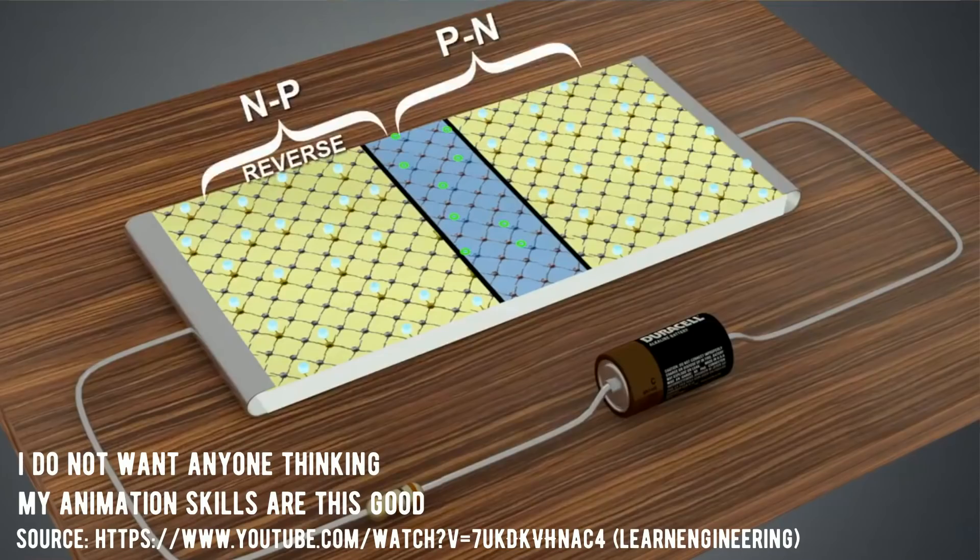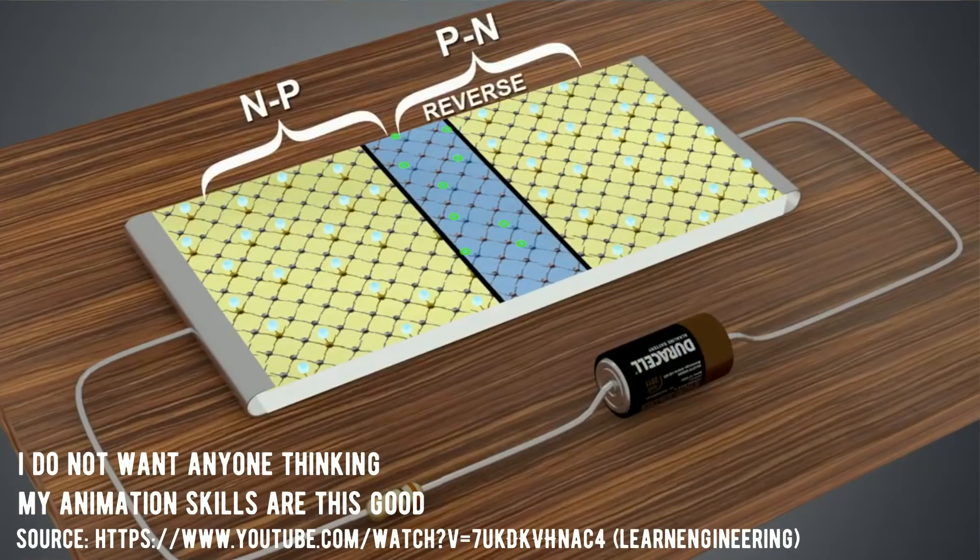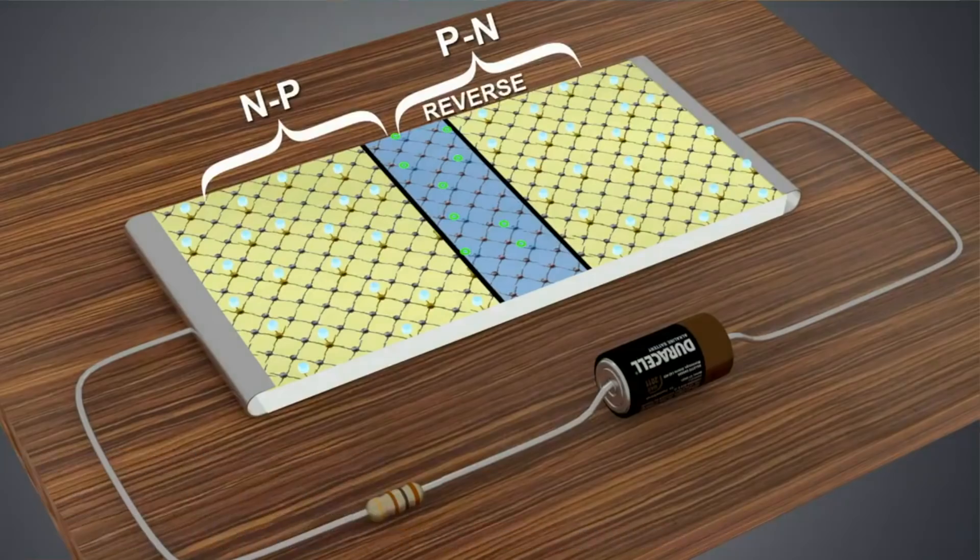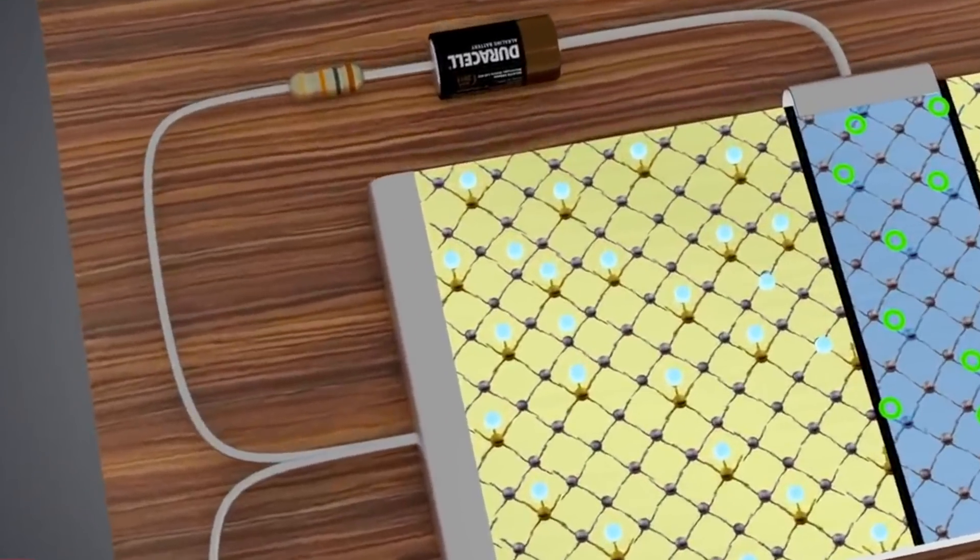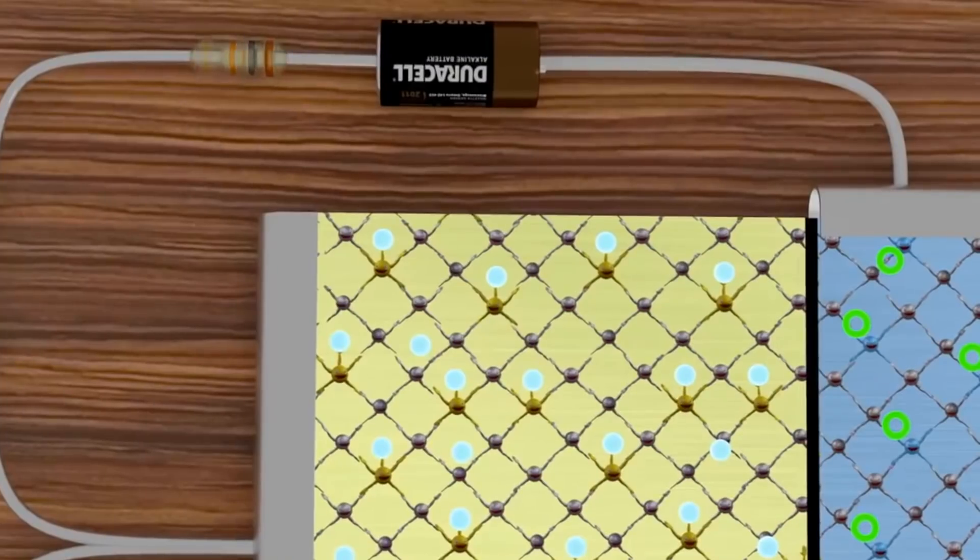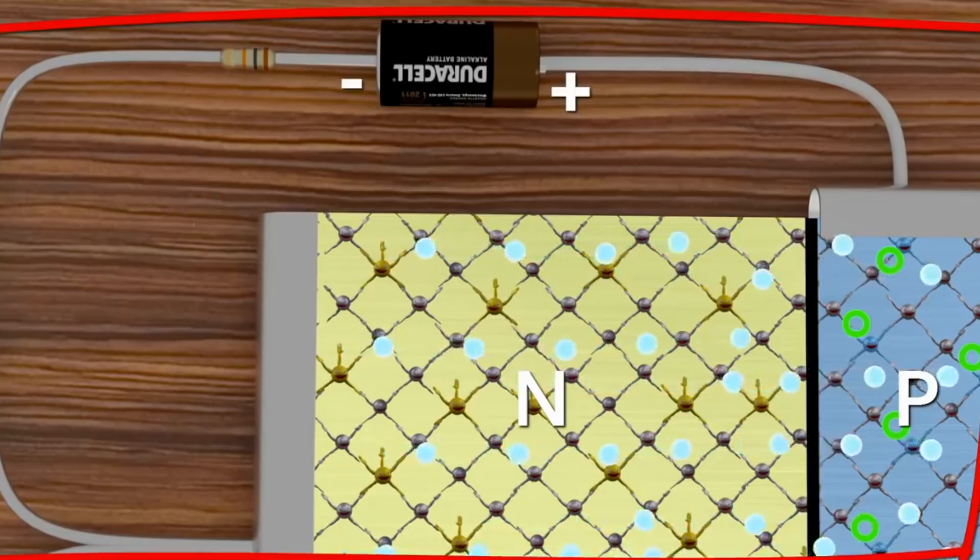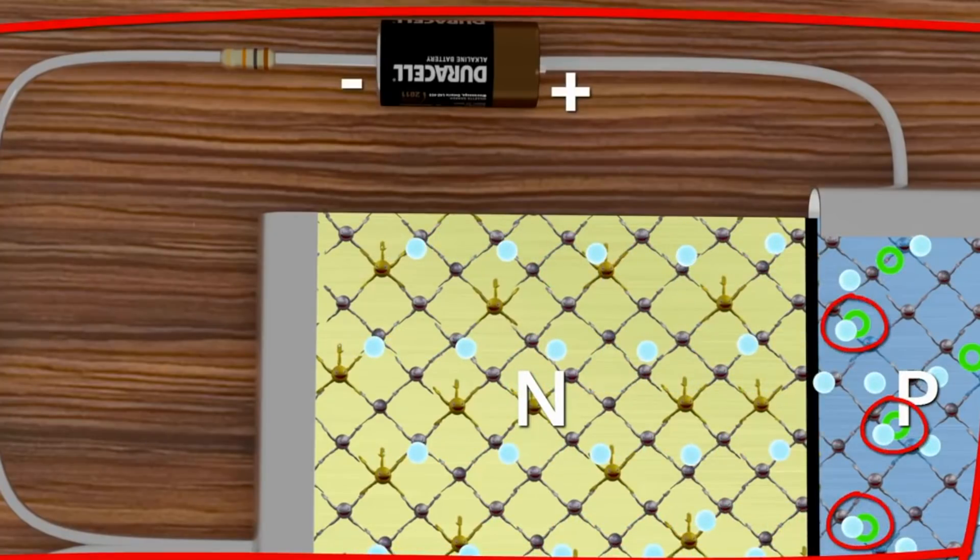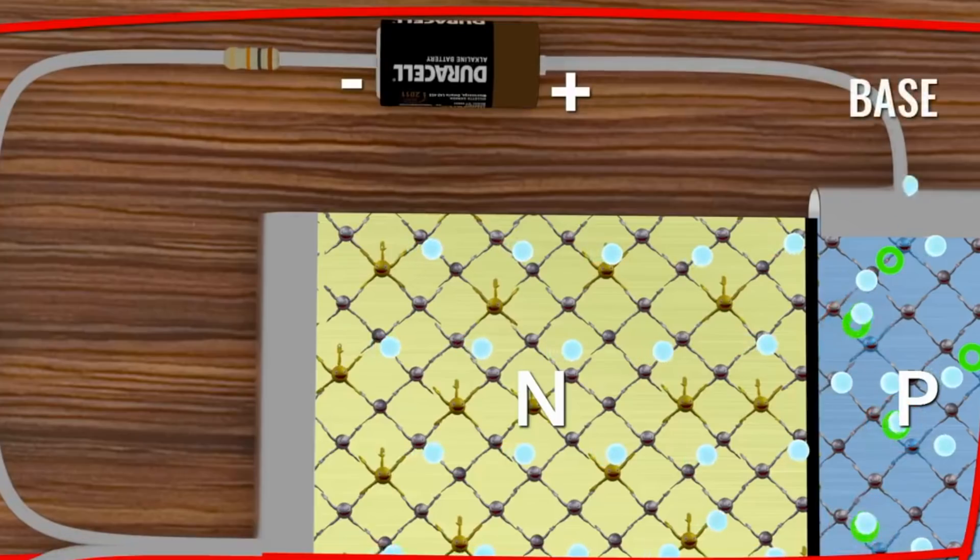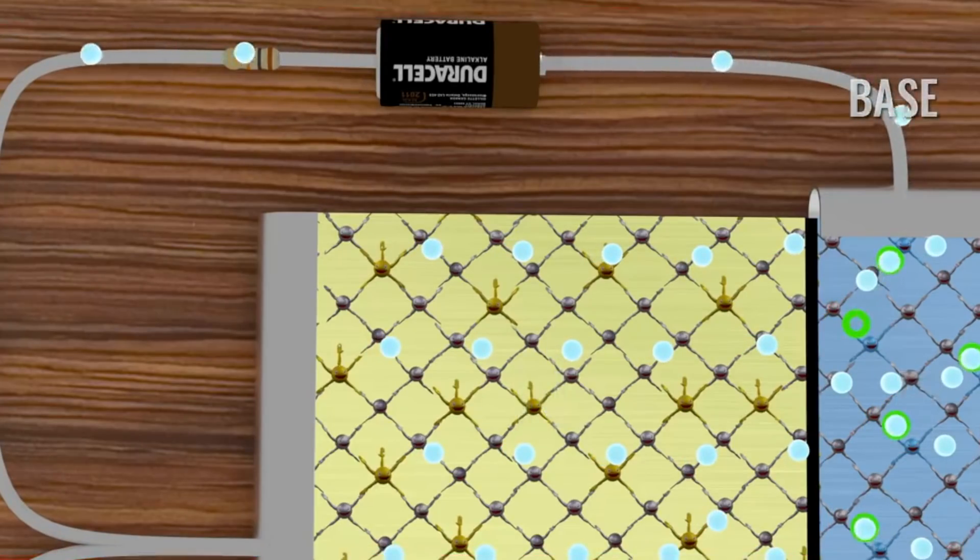NPN transistors have one P-type silicon wafer sandwiched between two N-types, so when it is hooked up to a battery, nothing happens except for a depletion region building around the boundary, separating the wafers. However, when we hook a battery up to the base and one of the N-regions, the base to the positive terminal and the N-region to negative, the electrons will flow from the N to the P-region and up the positive terminal.